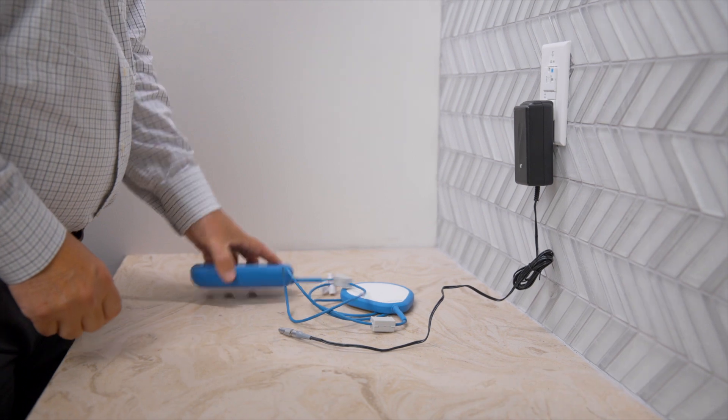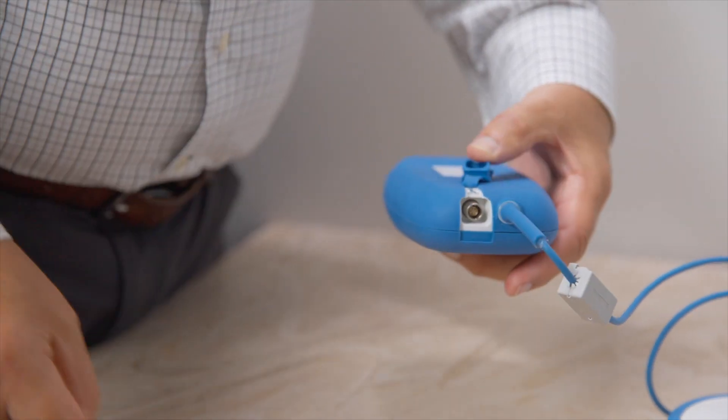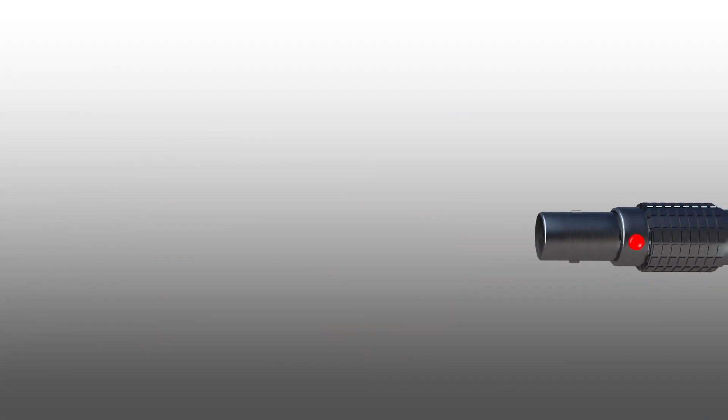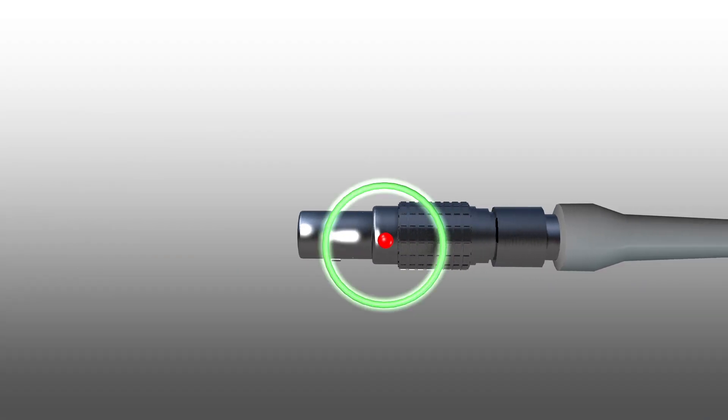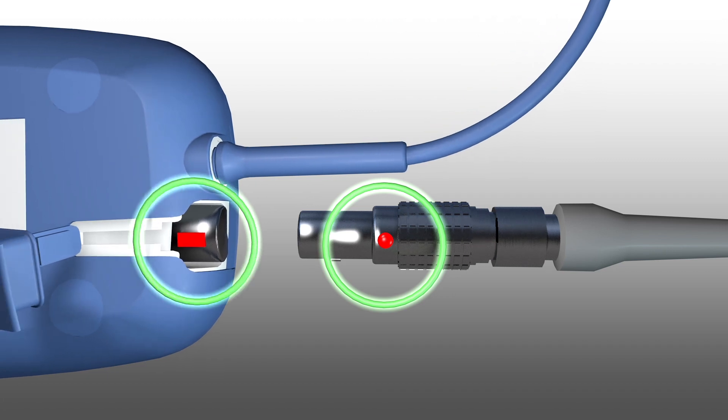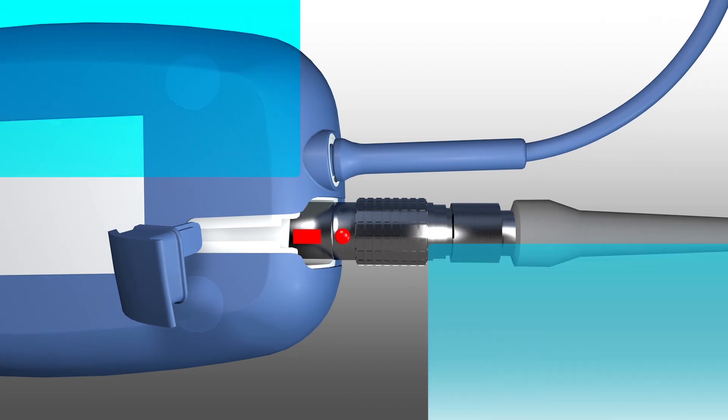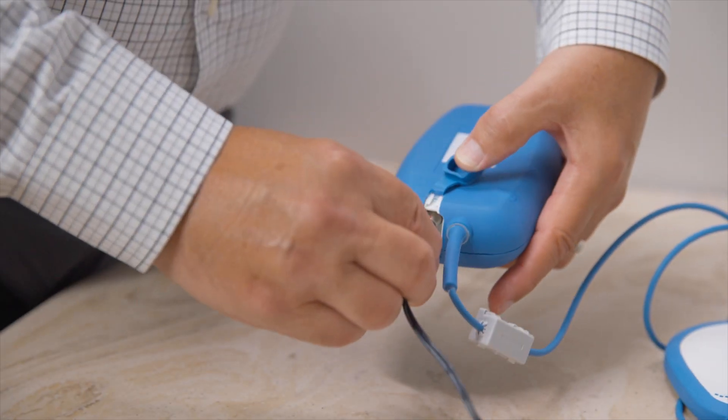Second, expose the charging port by opening the blue cover on top of the charger. Third, locate the red dot on the round silver end of the AC adapter and the red line on the charging port of the charger. Finally, line up the red markings and plug the round silver end of the AC adapter into the charging port.